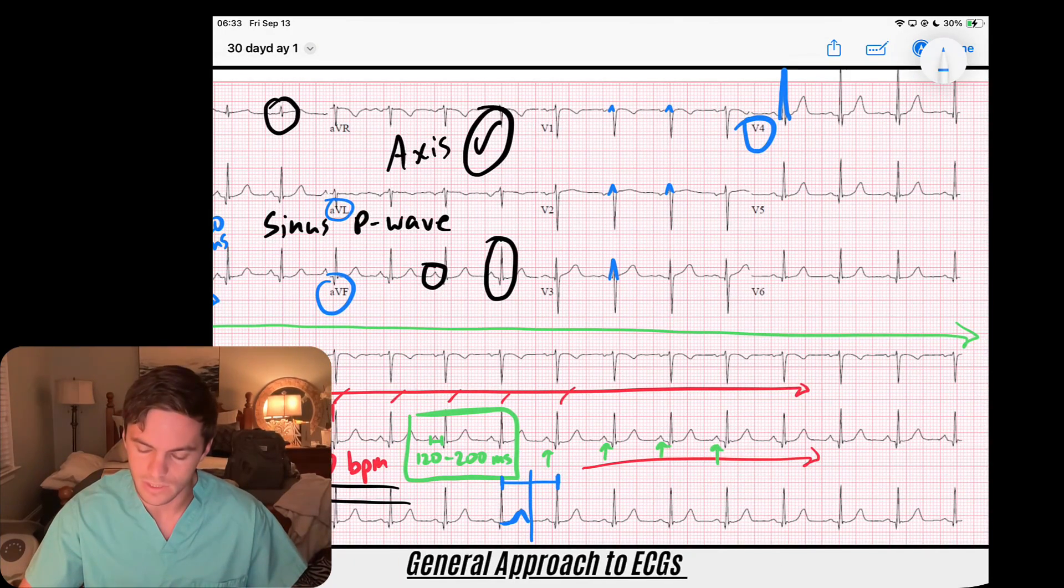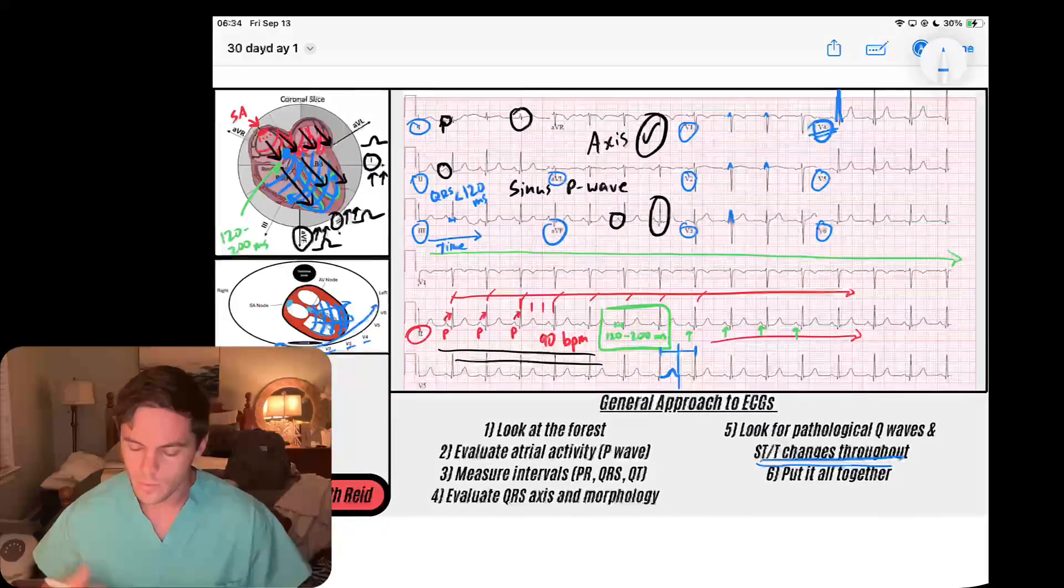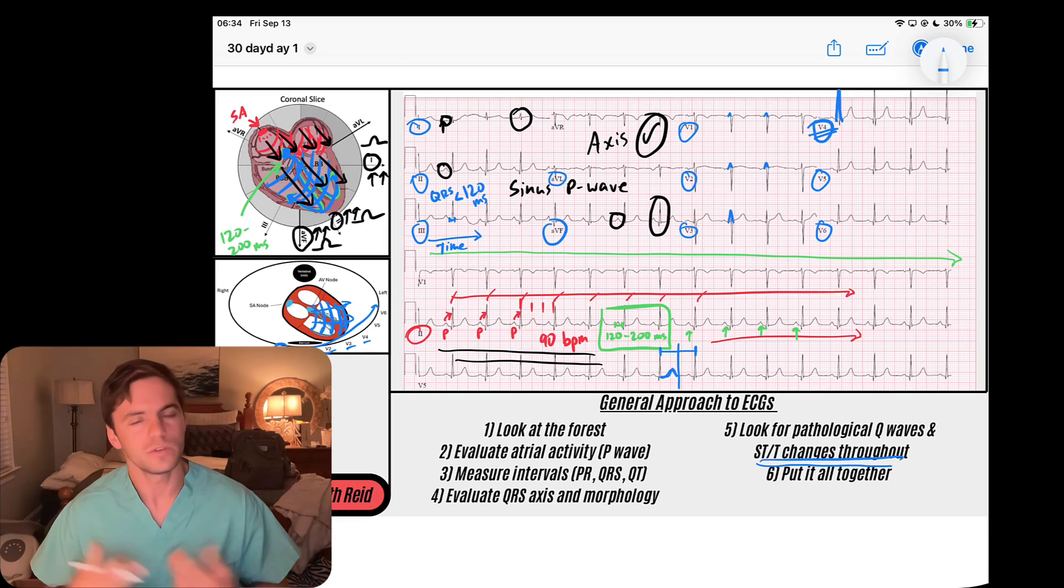We can look in the high lateral leads of leads one and AVL, in the septal leads V1 and V2, in the anterior leads V3 and V4, and then in the lateral leads of V5 and V6. Those are our anatomical correlating leads or contiguous leads. Then we put this all together, and we would say we have a normal sinus rhythm at 90 beats per minute.